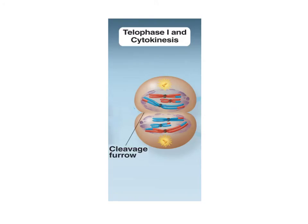After anaphase I comes telophase I, where cytokinesis occurs as well. We're splitting into two haploid cells that have double-stranded chromosomes. We've separated out those homologous pairs so they only have one of each chromosome, but those chromosomes were replicated back in interphase. So now we need to separate out those sister chromatids, which is what's going to happen during meiosis II.